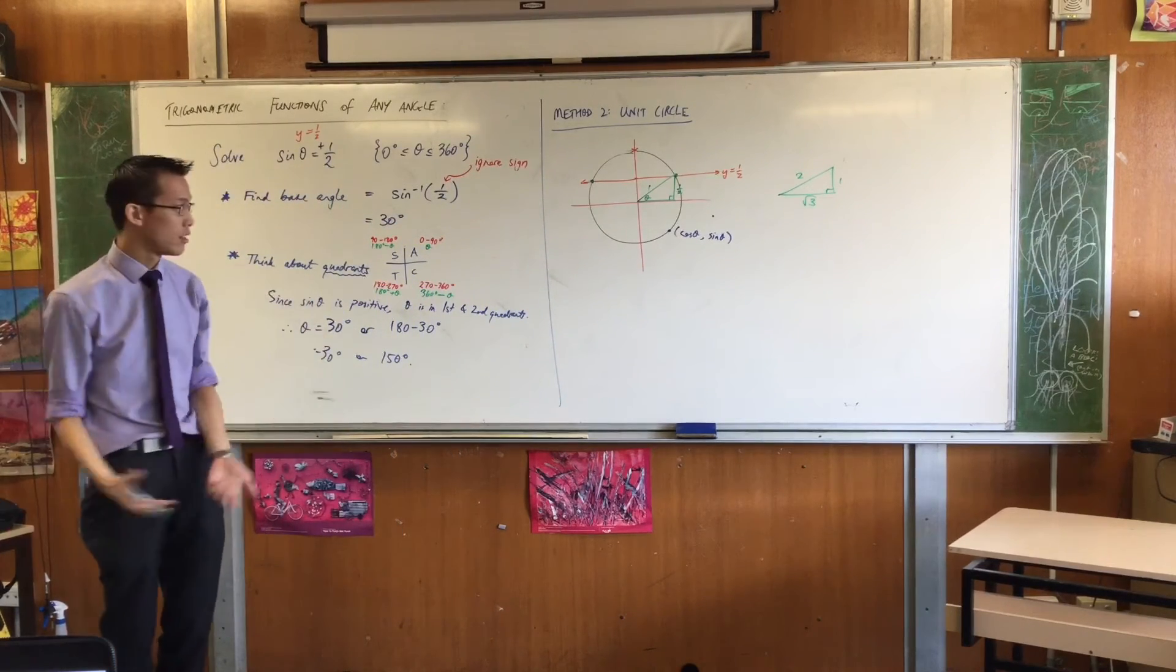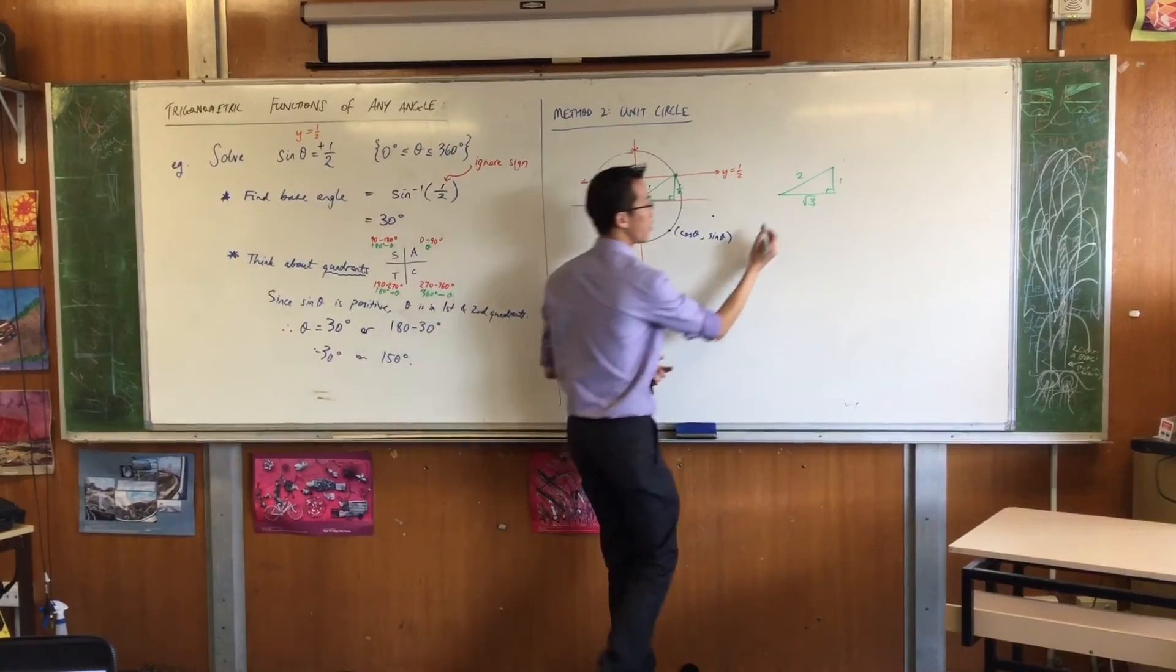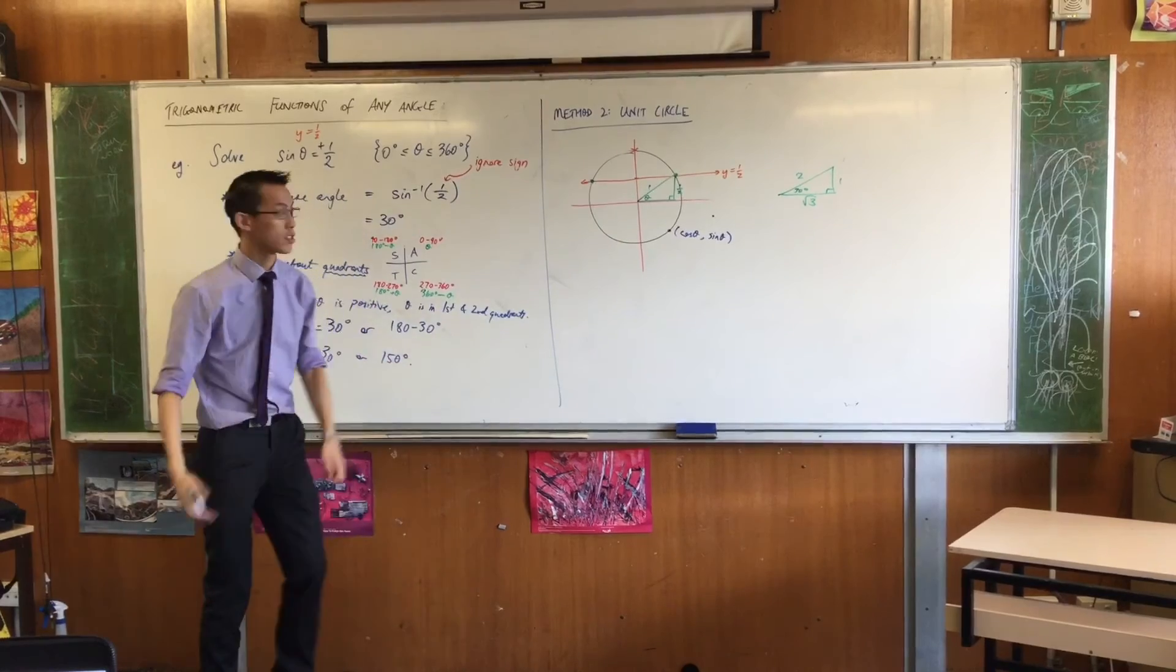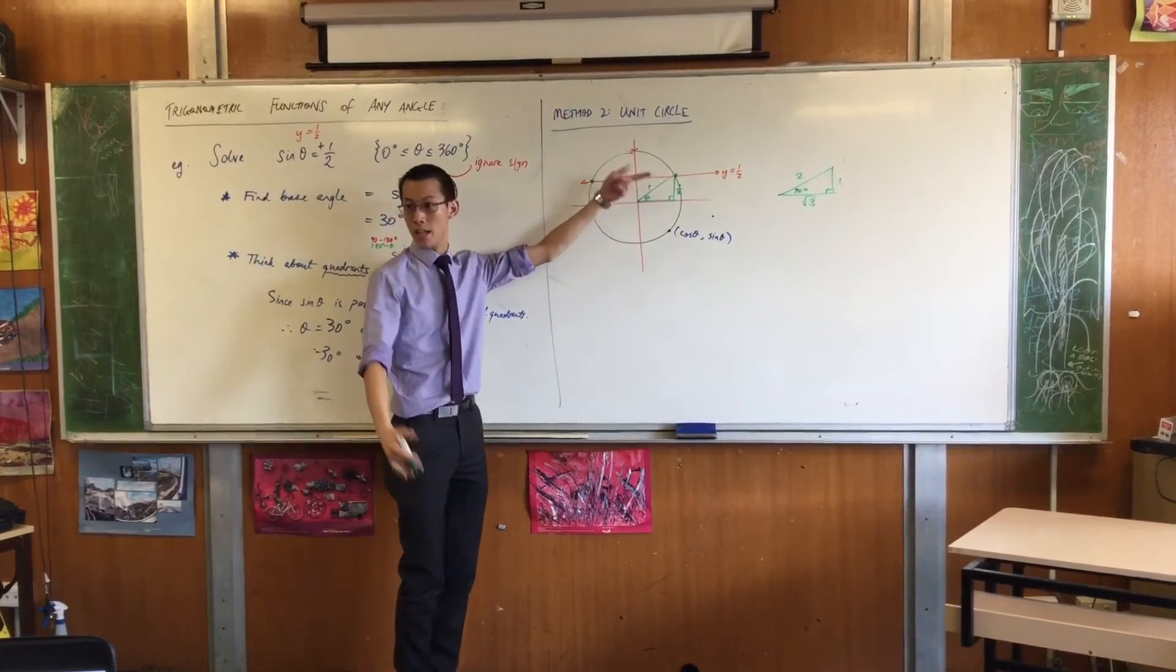So therefore, being that I've shrunk it on scale, that corner angle is still going to be 30 degrees. Okay? So there's my first solution. I just read it off right there, 30.